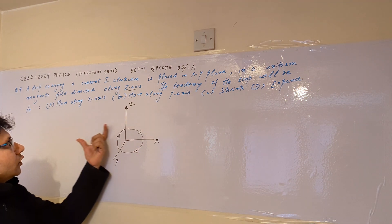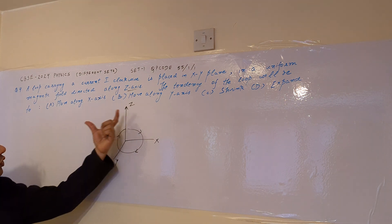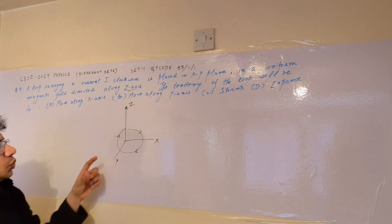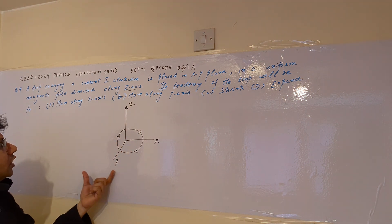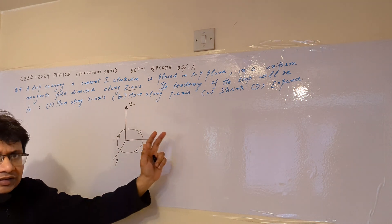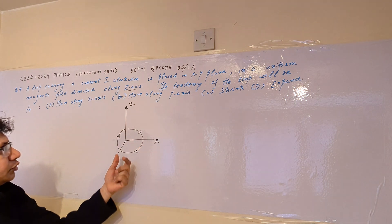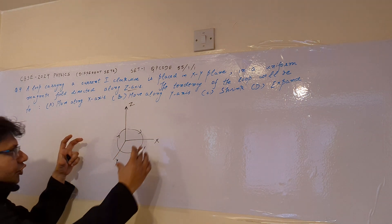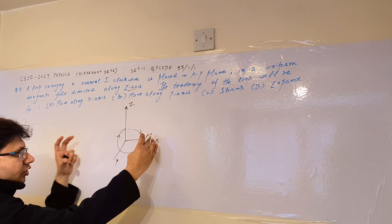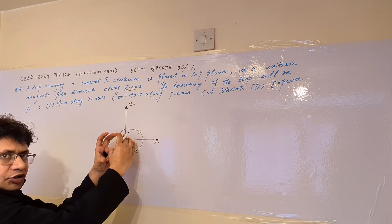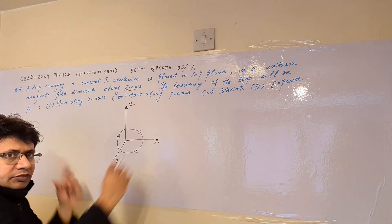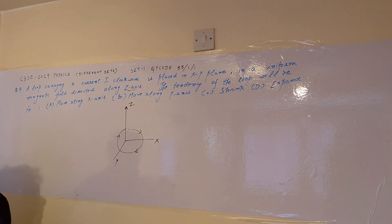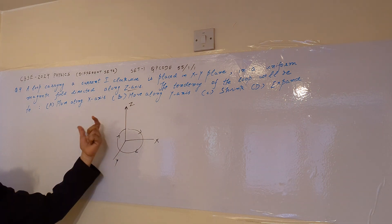Now we have to find out what will be the tendency of the loop. Tendency means whether it moves along the X axis, whether it moves along the Y axis, whether it shrinks — meaning goes inward — or whether it expands. So this is the question.